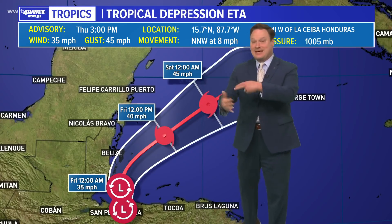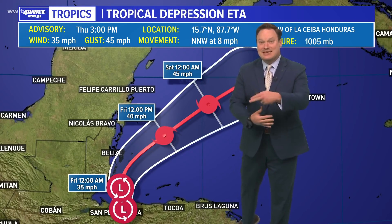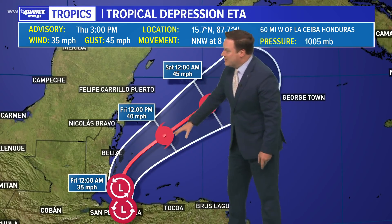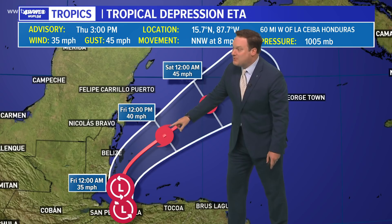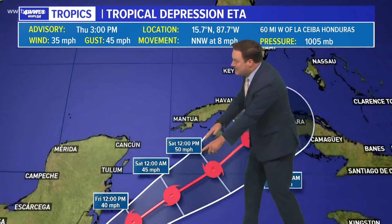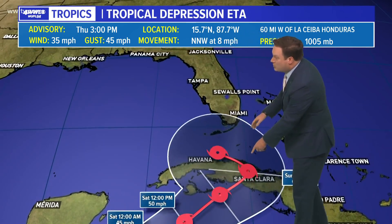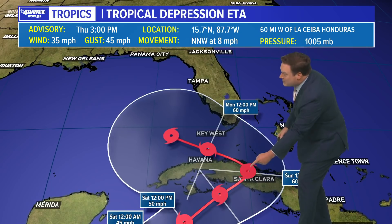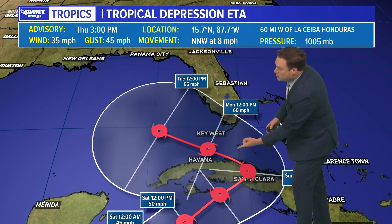The second thing is it needs to start to get its act together. The hurricane center thinks that may start to happen tomorrow, and Ada becomes a tropical storm, then continues toward Cuba. The reason for this kind of sharp turn is we start to see some steering currents picking up and pushing the storm into the Gulf.